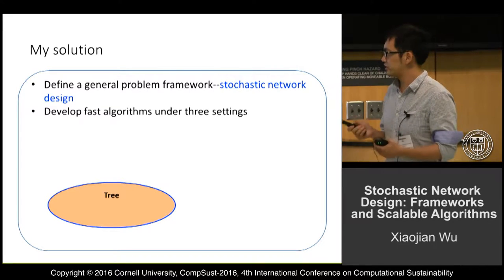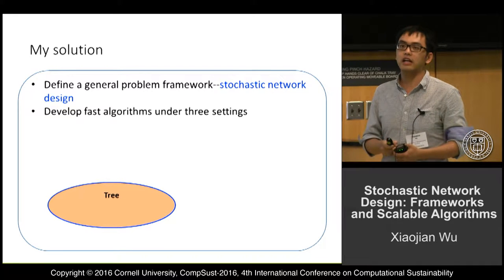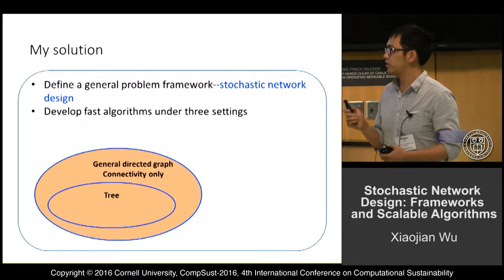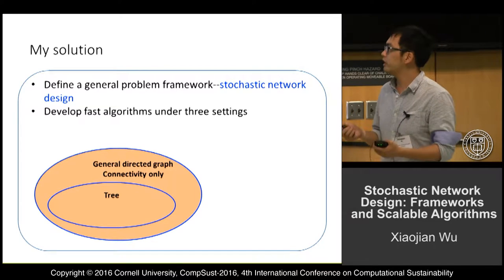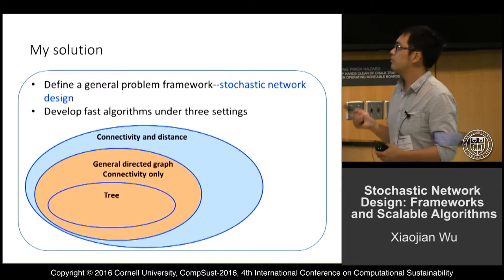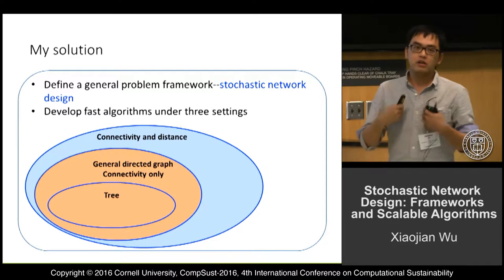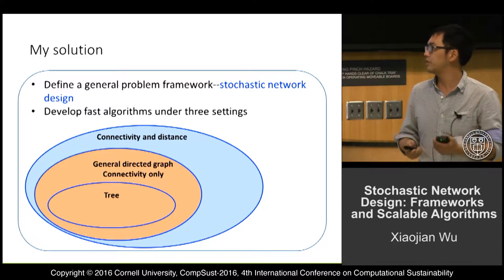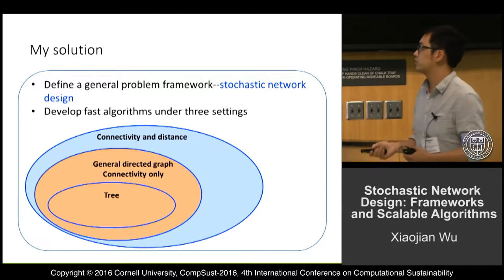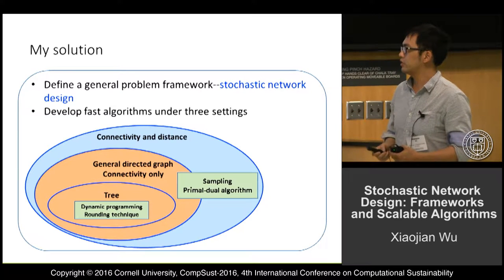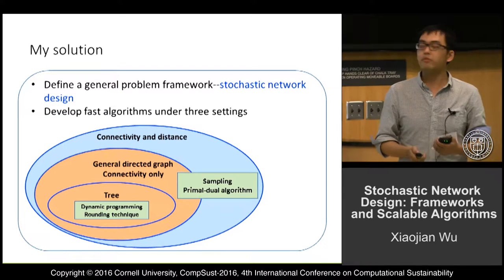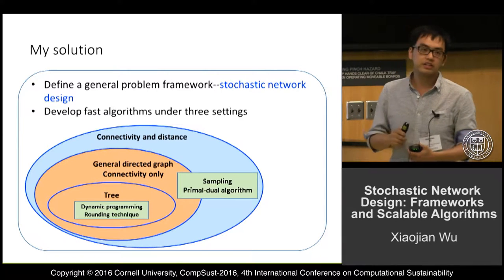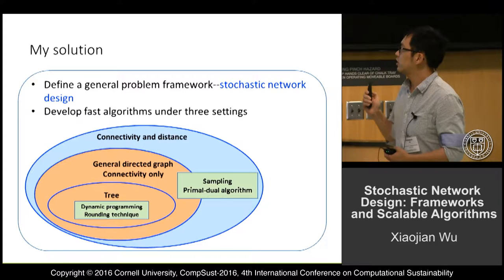The most restrictive setting assumes the underlying network is a tree. The slightly more general setting assumes it is a general directed graph, but we only care about the connectivity of the network. The most general setting maximizes the connectivity of the network and also considers minimizing the distance between connected nodes. For all three cases, the techniques we use are dynamic programming and rounding strategies, and for the last two settings we also use sampling techniques and parametric algorithms.